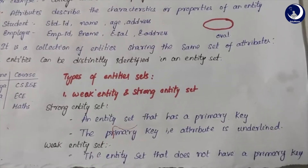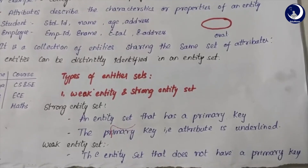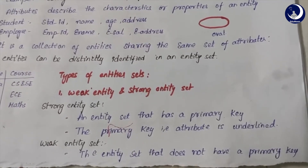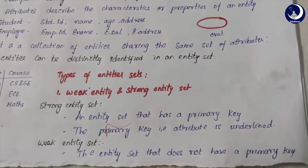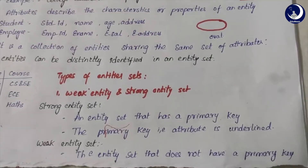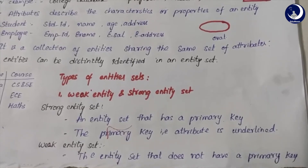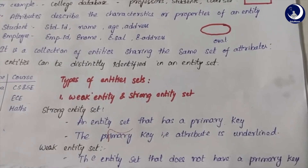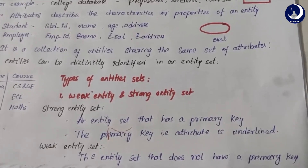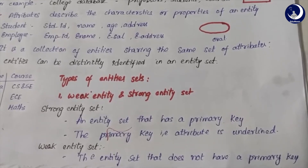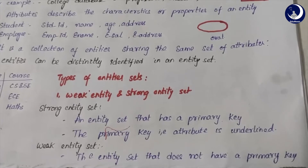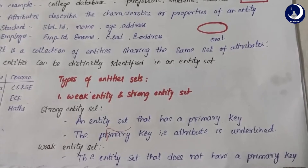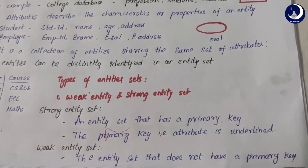The two types of entity sets are weak entity set and strong entity set. A strong entity set is an entity set that has a primary key used to uniquely identify each entity. For example, in a student table we have student ID, and in an employee table we have employee ID. In an ER diagram, strong entities are represented with the primary key attribute underlined. Any entity set having a primary key is called a strong entity set.